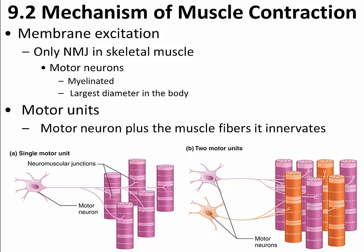In 9.2, the first thing we see is an overview of the anatomy of the neuromuscular junction and the motor unit. Skeletal muscles — and here we're exclusively talking about skeletal muscles — only contract as a result of stimulation via the neuromuscular junction. Skeletal muscles are innervated by motor neurons, which are some of the largest and also myelinated neurons in the body. Both diameter and myelination speed up the conduction of action potentials through those neurons.